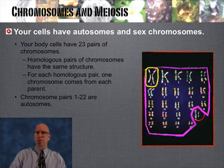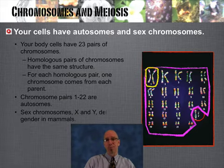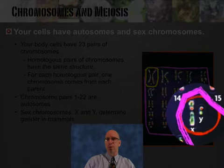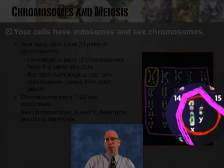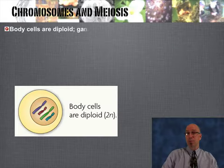Chromosomes one through 22 — those pairs are called autosomes, and they have nothing to do with determining whether you're male or female. That's where the sex chromosomes come in. In humans, the X and the Y determine whether you're male or female. Down there circled in red, we have an X and a Y. The Y is just a tiny fragment of a chromosome — not too many genes on it, but some important ones for guys.